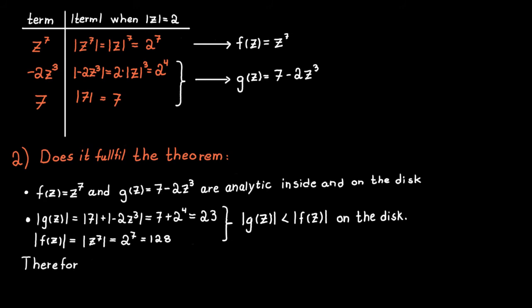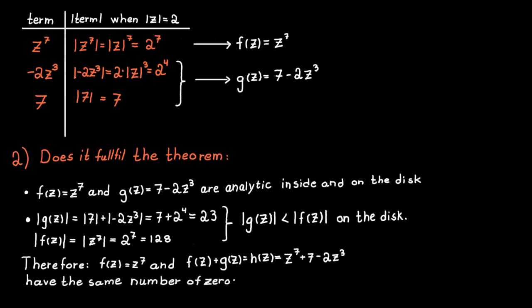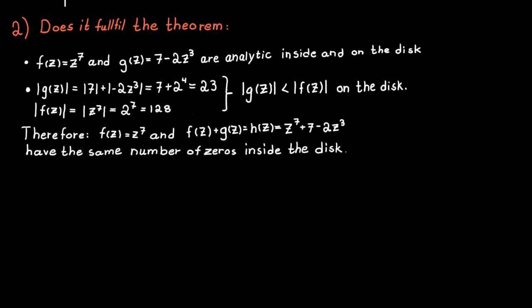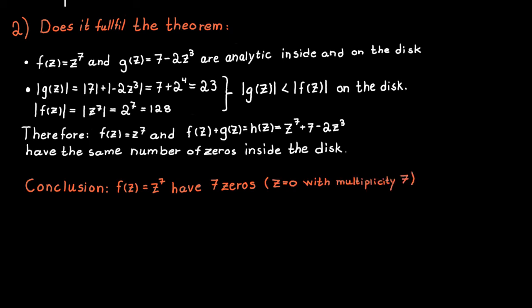Therefore, by Rouché's theorem, the functions f and f plus g — which is equal to the function h we started with — have the same number of zeros inside the disk. So instead of determining how many zeros h has inside the disk, we can determine how many zeros f has, which is much simpler. The function f has seven zeros inside the disk; the zero is in fact zero with multiplicity 7. Therefore, by Rouché's theorem, f plus g, which equals h, also has seven zeros inside the disk.